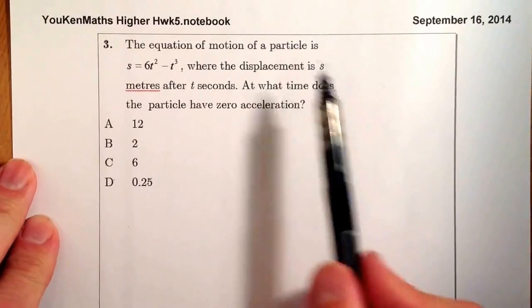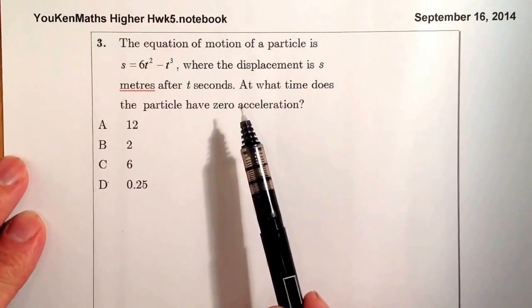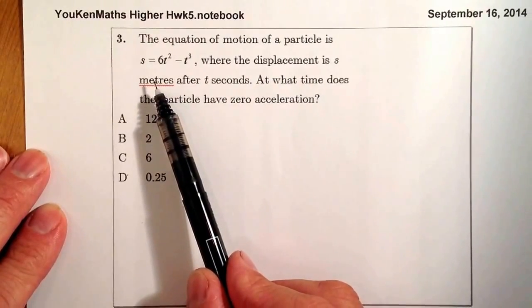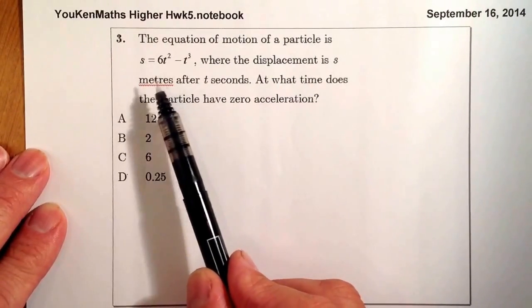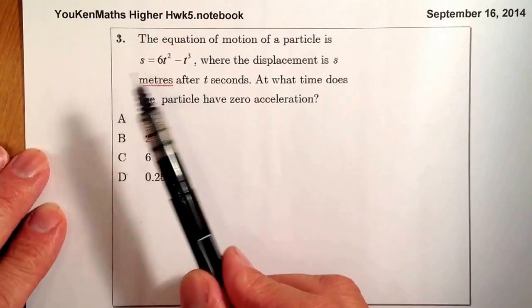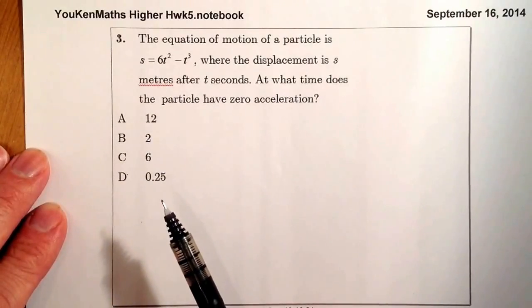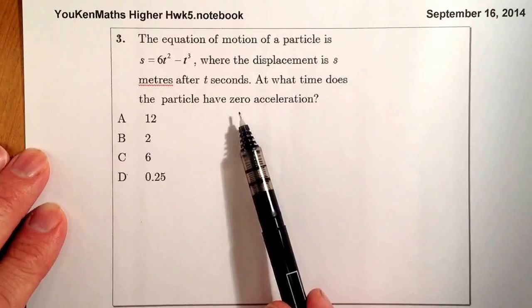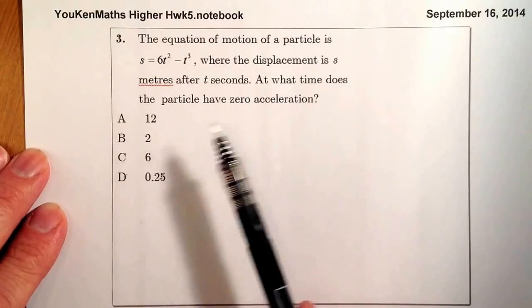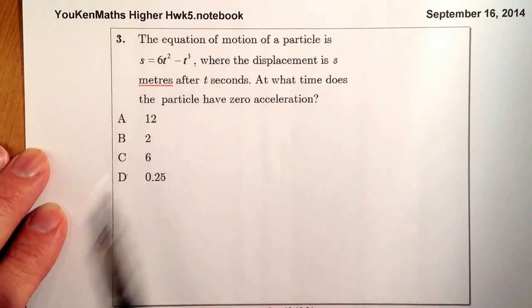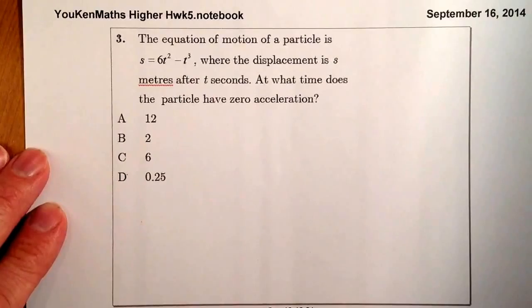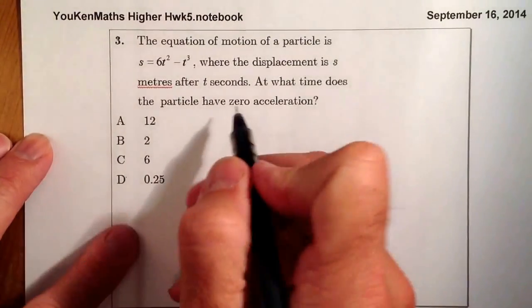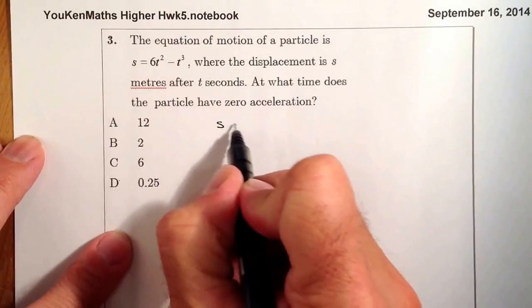This is a differentiation question. If I differentiate the displacement, I'll get a formula for the velocity. If I then differentiate the velocity, I'll get a formula for the acceleration. I can then set that formula equal to zero and solve it, and that will give me a time where the particle has zero acceleration. Let's go ahead and do that. So let's start with the displacement.